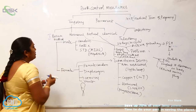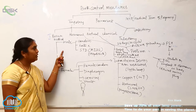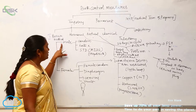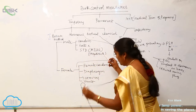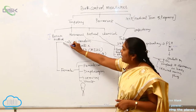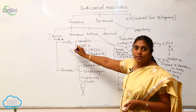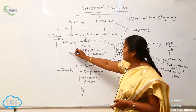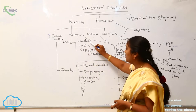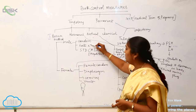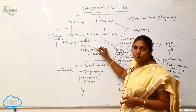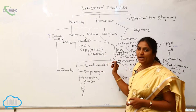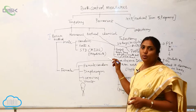There are four types of temporary methods: barrier method, hormonal method, natural method, and chemical method. In the barrier method, it is done in both males and females. In males, it involves three steps: first is the use of condoms, second is the latex method, and third relates to STDs such as AIDS and Hepatitis B, which especially affect males.